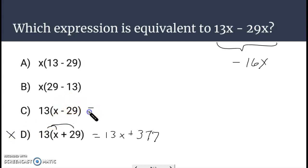And then it looks like we get a very similar thing here if we distribute the 13 and get 13x minus 377. Can't combine those terms. C's out.